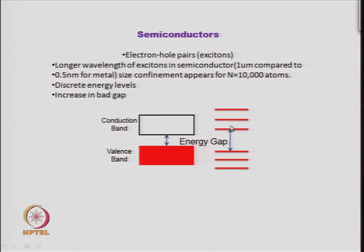This effect is called quantum confinement, because we are confining the electrons and the energy gap is becoming higher, so an electron cannot be excited easily unless you give higher energy. The increase in band gap and confinement appears for particles with around 10,000 atoms, which may be a size of around 0.5 nanometers, compared to a bulk particle which is around 1 micron.